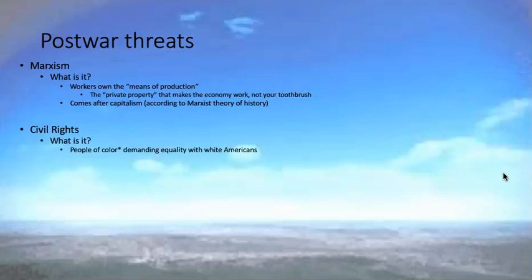Civil rights: people of color demanding equality. While 'people of color' is an ahistorical term for the 1950s, it's the contemporary term — so while ahistorical, it's accurate. Dixiecrats like Strom Thurmond see this as a threat to traditional southern values. It's also associated with communism: if you're a person of color demanding your equal rights, you want equality — that sounds a lot like communism. In the South, that rhetoric is a very potent tool to fight civil rights.